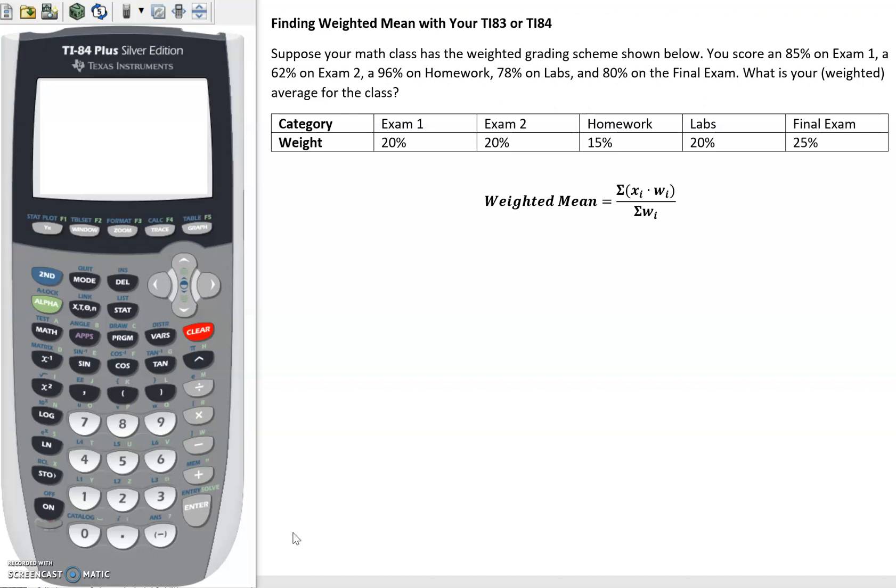So how do we know this is a weighted mean? Well, there's usually some sort of categories that have different weights. A very common place we see this is with the grades for a class. So we've got a grading scheme with a couple exams, homework, labs, and a final exam, and those have different weights shown in the table.